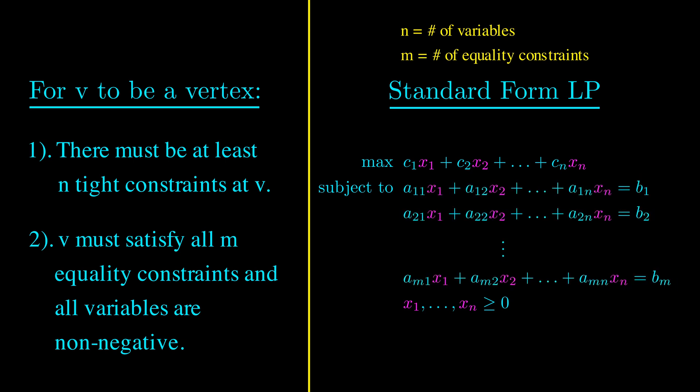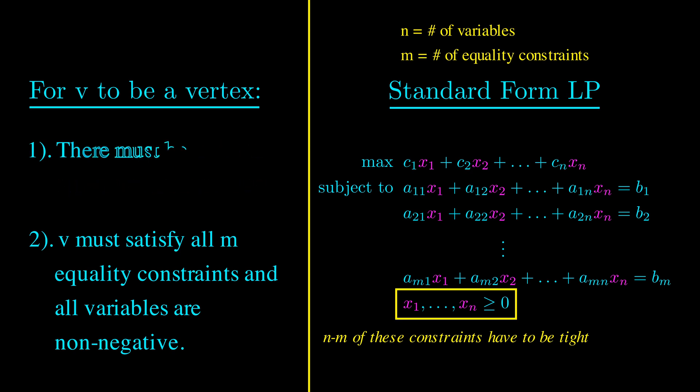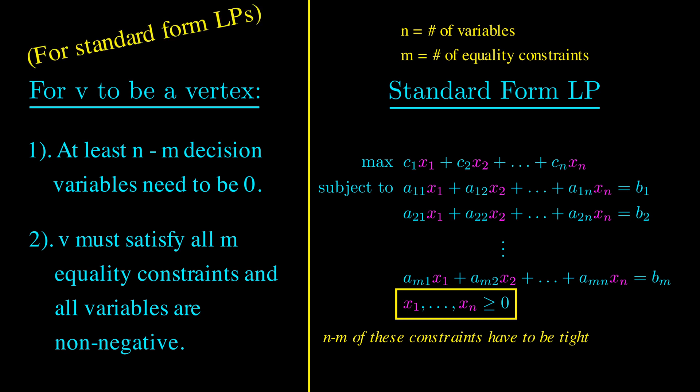Therefore, this means that for a vertex to be tight at n constraints, n minus m of these non-negativity constraints have to be tight. Or in other words, n minus m decision variables need to be 0. These are the conditions for standard form LPs.